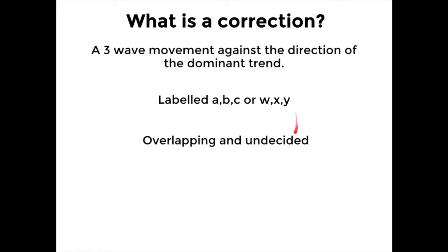A correction consists of overlapping and undecided market moves — there's basically no power in the moves. Price movement in a particular direction within that correction will be retraced to a large extent, and a correction will take what seems like an age compared to an impulse move. It's almost like the market does not want to do it — the price is moving against what it really wants to do, and that bears witness in the price structure itself.